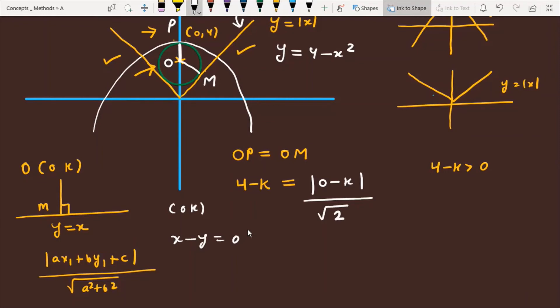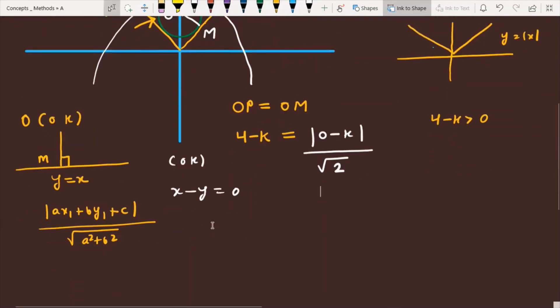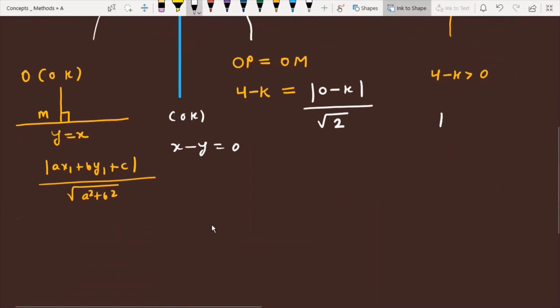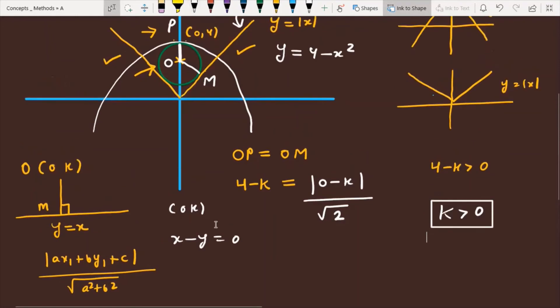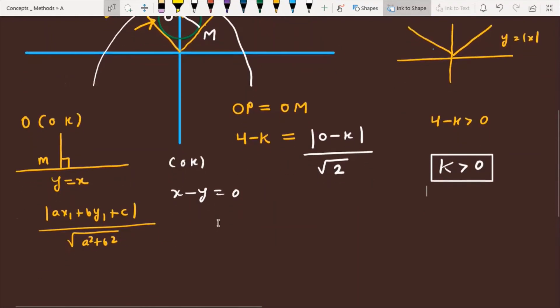This is 0 minus k divided by root 2. So I expect that you will understand the data. Now we have to simplify k. Now you have to pay attention that k must be greater than 0, because this is above the x-axis.